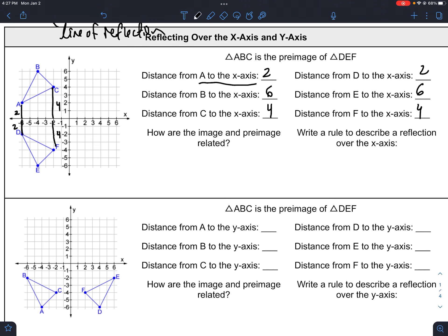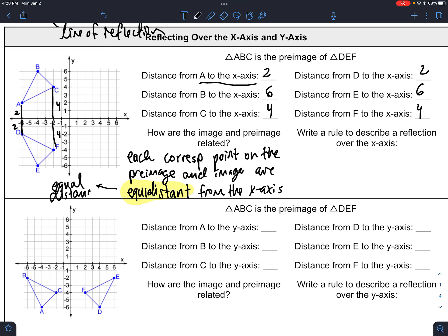So how are these related? Well, each corresponding point on the preimage and the image are equidistant from the x-axis. So equidistant is used a lot in geometry. Equidistant means that they're equal distance apart. So it's talking about how A and D are both 2 away from the x-axis. And that's what's characteristic of reflections.